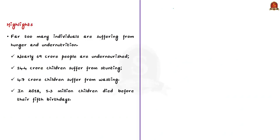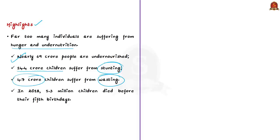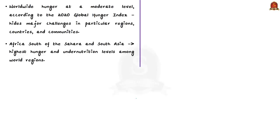Now let us see the highlights of the 2020 report and what it has to say about India. The report states that far too many individuals are suffering from hunger and undernutrition. Nearly 69 crore people are undernourished, 14.4 crore children are suffering from stunting, 4.7 crore children suffer from wasting, and in 2018, 5.3 million children died before their fifth birthday — in many cases as a result of undernutrition. Worldwide hunger is at a moderate level according to the 2020 GHI.